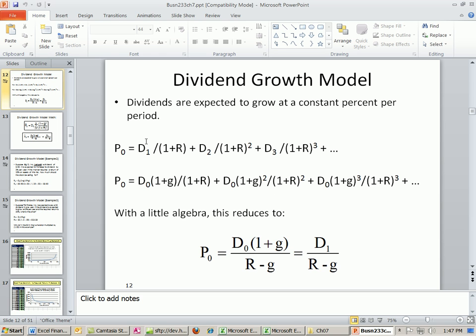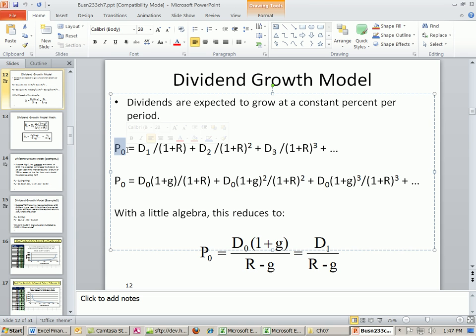And in our first video and the next couple ones after that, we talked about how the price right now is the discounted future dividend. So here's dividend 1, dividend 2 discounted back 2 periods, dividend 3 discounted back 3 periods, on out into infinity. Now, if you do a little algebra on this, you get this.